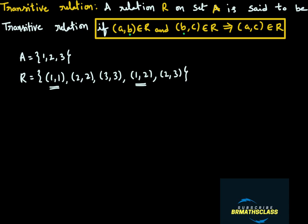What is (A,C) here? (A,C) is ordered pair (1,2). Try to understand: (A,B) = (1,1) and (B,C) = (1,2), so (A,C) is (1,2). Is ordered pair (1,2) there in this relation? Yes, it is there. So it is satisfying this condition. From this, can we say it is a transitive relation? No, we cannot say this is a transitive relation from just this one example. We have to check for every pair of ordered pairs.